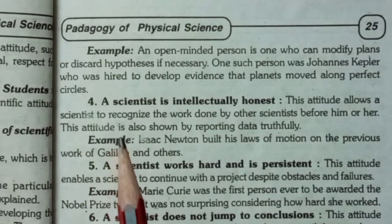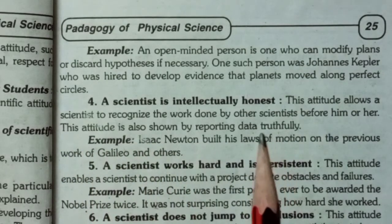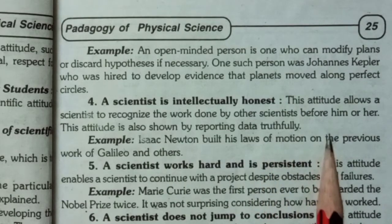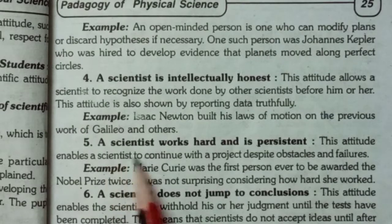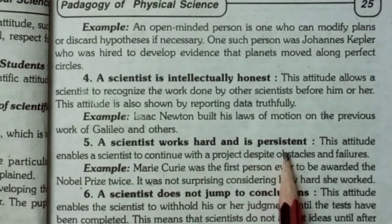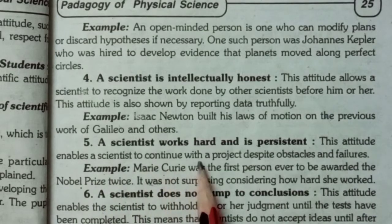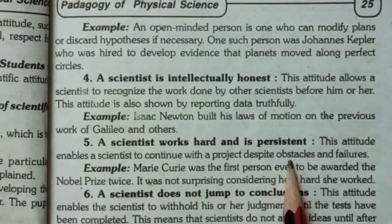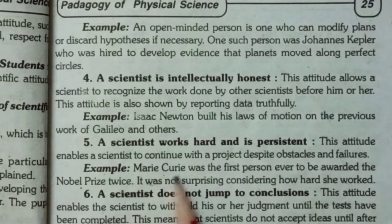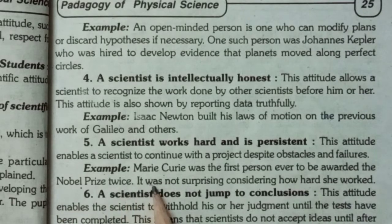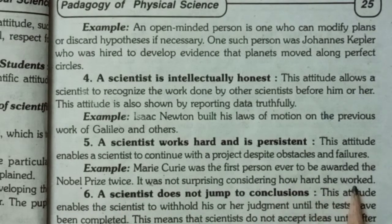Fifth, a scientist works hard and is persistent. This attitude enables a scientist to continue with a project despite obstacles and failures. For example, Marie Curie was the first person ever to be awarded the Nobel Prize twice, which is not surprising considering how hard she worked.